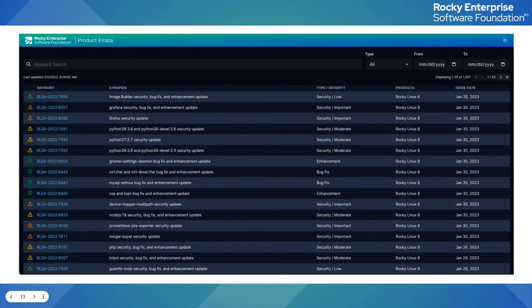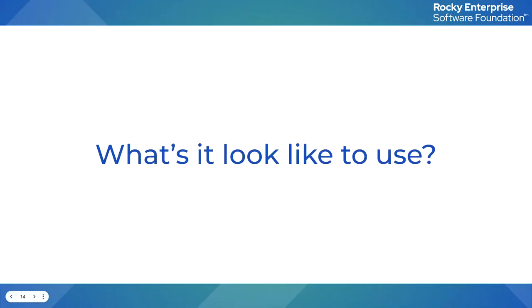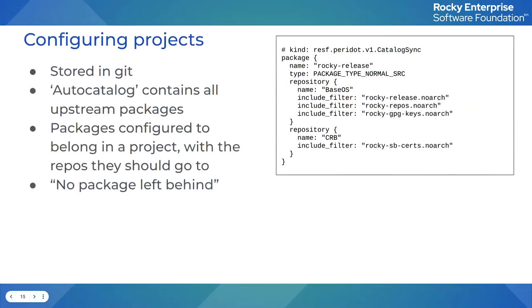It of course supports dark mode, because why wouldn't it? In comparison to DistroBuild, Peridot has a declarative syntax that allows us to set up projects in any form. The first thing you do when setting up a Peridot project is configure all the packages inside that project and what repositories they go into. We have a script that parses upstream data for what packages need to be in certain repositories — base OS, app stream, etc. — and we write a catalog file with the package names, repositories, and architectures that should be in those repositories.